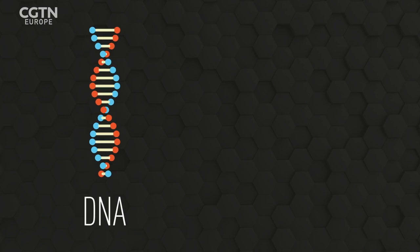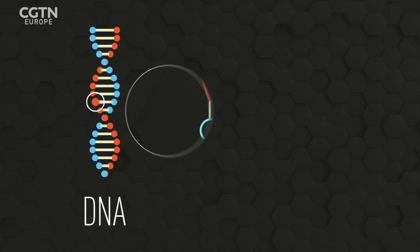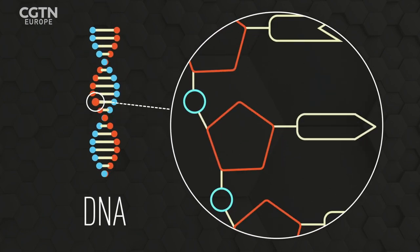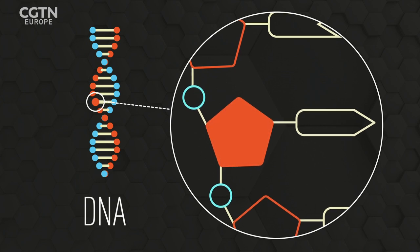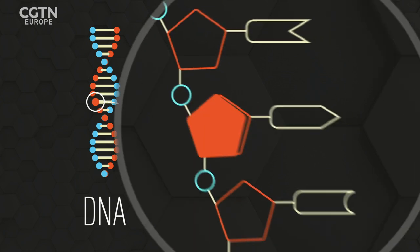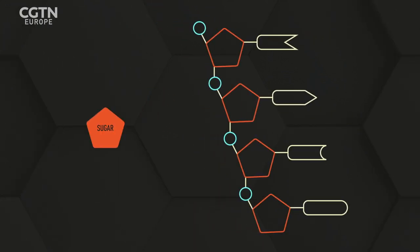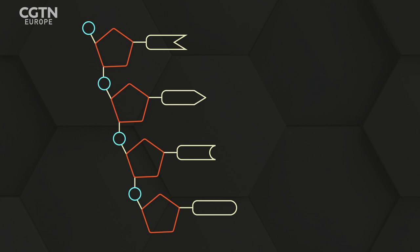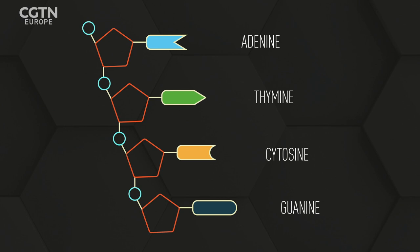Both can be broken down into smaller sections called nucleotides, consisting of a phosphate, a sugar, and a base. The sugar separates the type of nucleic acid, being either deoxyribose or ribose. In DNA, the base can be one of four different types: adenine, thymine, cytosine, and guanine, which codes the genetic information a bit like a four-letter alphabet.